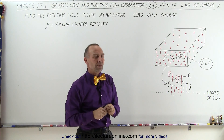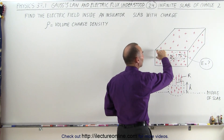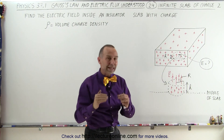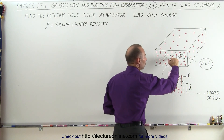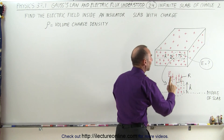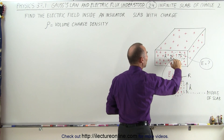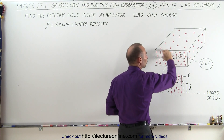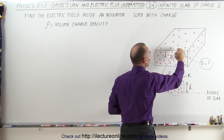Why is the middle of the slab so important? When you're at the middle of the slab, you have exactly the same amount of charge above as you do below, and there will be no electric field at all at the very middle of the slab. As you move away from the middle of the slab, you have more charge below you than above you, and there begins to be an electric field in the upward direction. By the time you get to the top of the slab, you have the most electric field — you have the most charge below you — so more electric field emanating away from the surface of the slab.